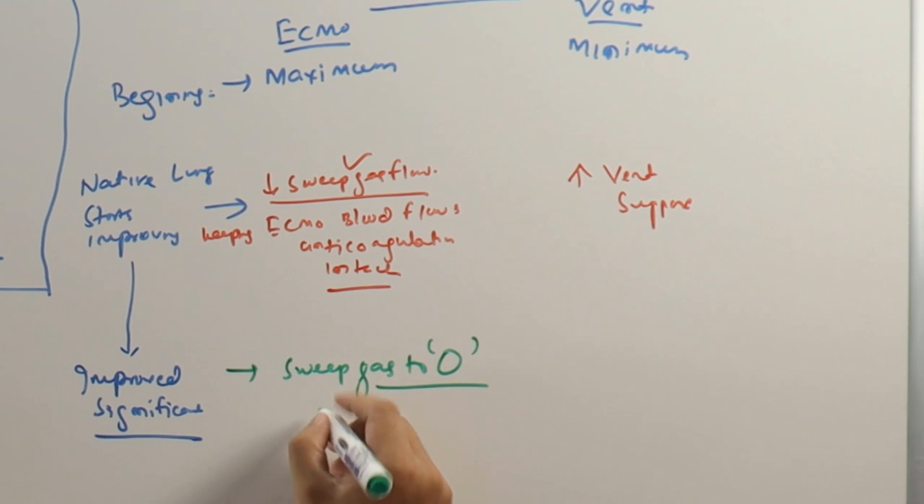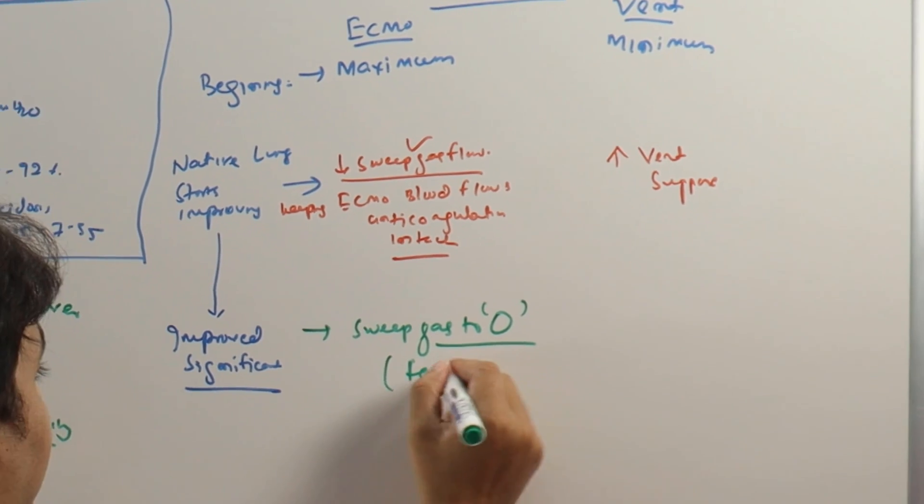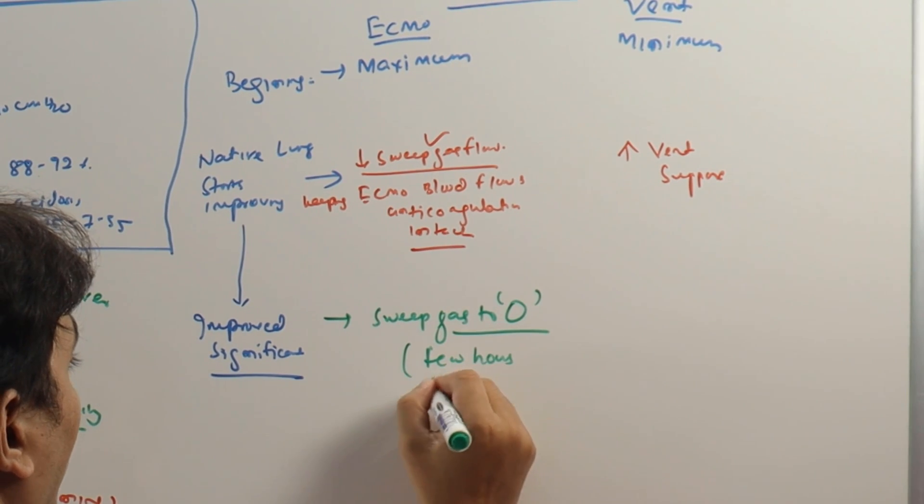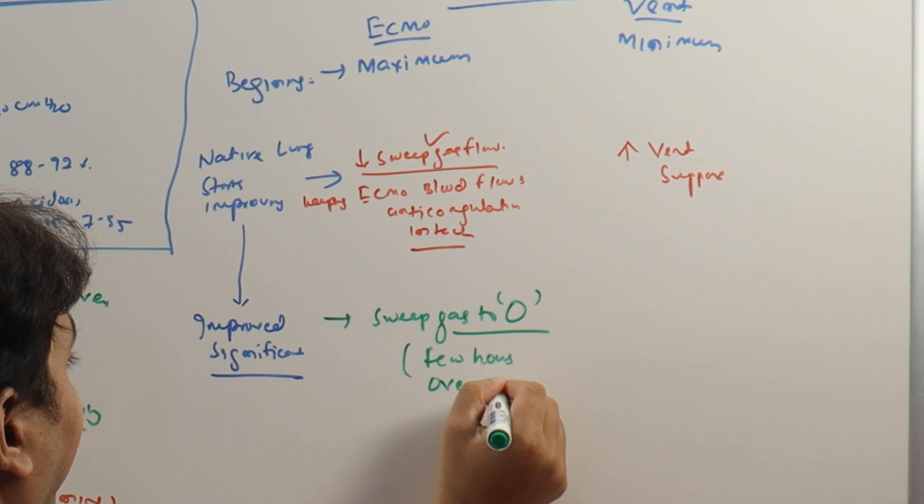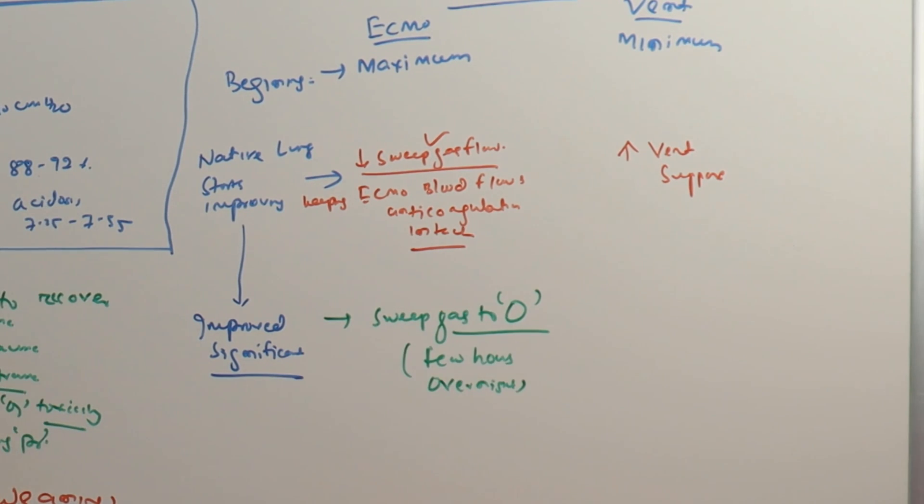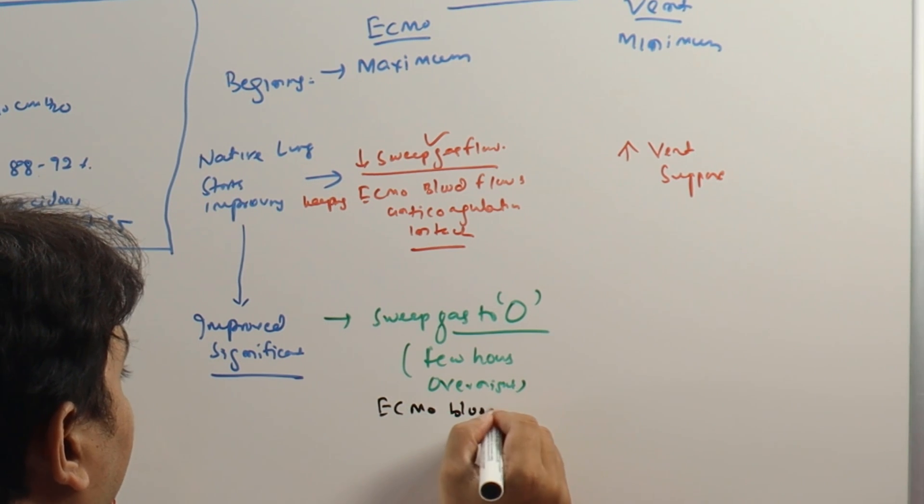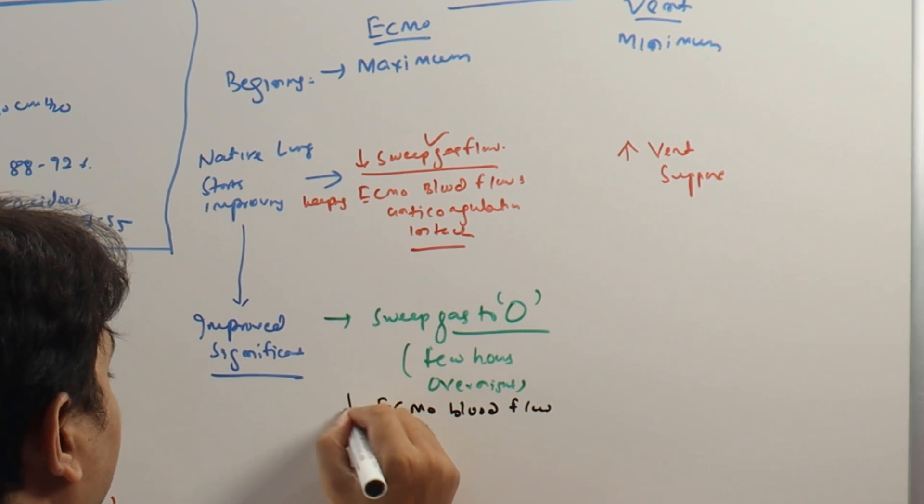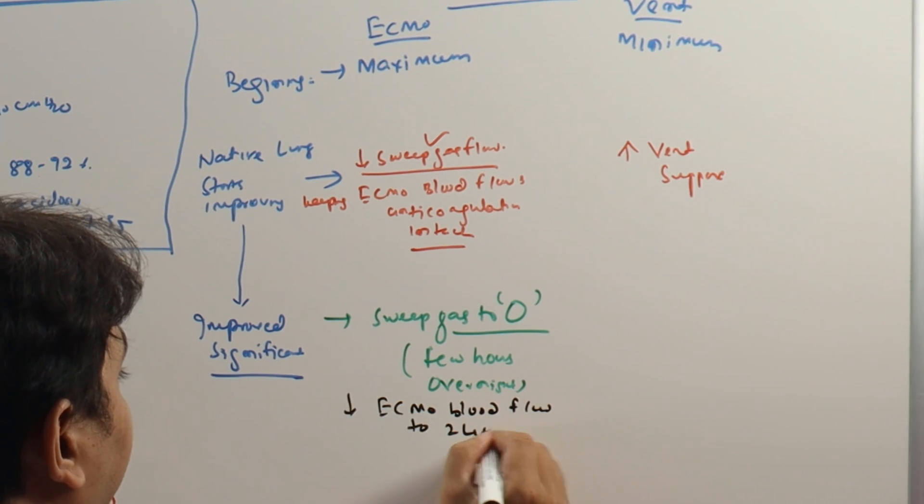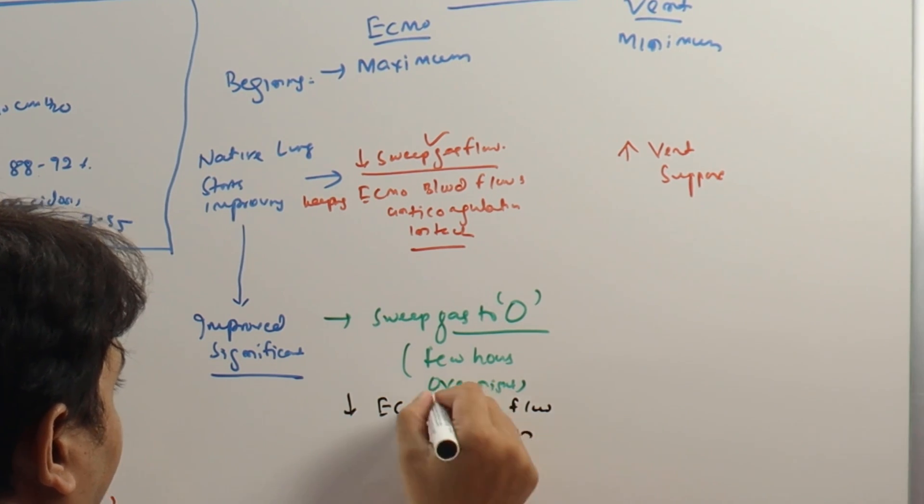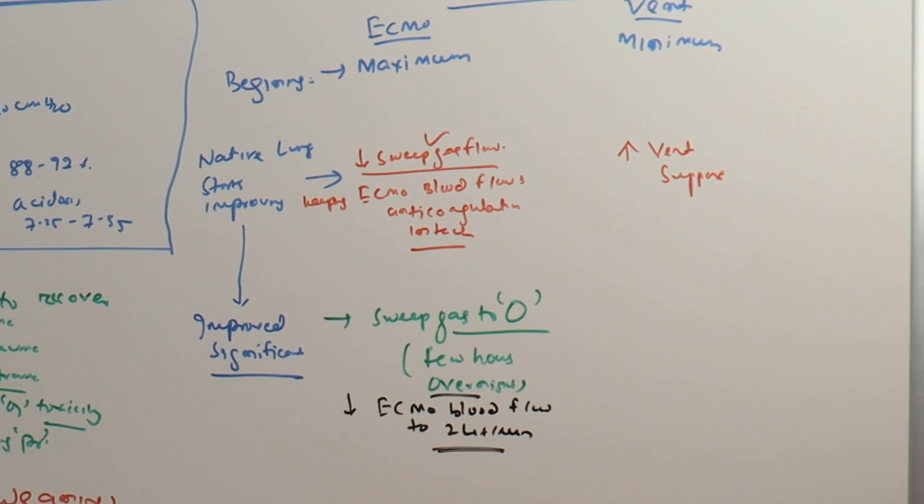At the same time, you can even decrease the sweep gas to zero, no sweep gas flow. It can be for few hours or overnight. If oxygenation is okay, you can decrease the ECMO blood flow, even decrease the ECMO blood flow to around 2 liters per minute.